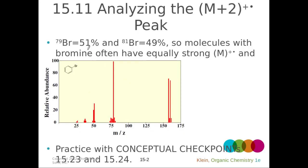We have a similar situation if we have a bromine in the molecule. Br-79 makes up 51% of naturally occurring bromine and Br-81 makes up 49%, so molecules with bromines have strong M+2 peaks. In this case the molecular ion peak is at 156, and the M+2 peak at 158 is about the same height — just a little shorter. This approximately 1:1 ratio is the characteristic pattern for bromine.